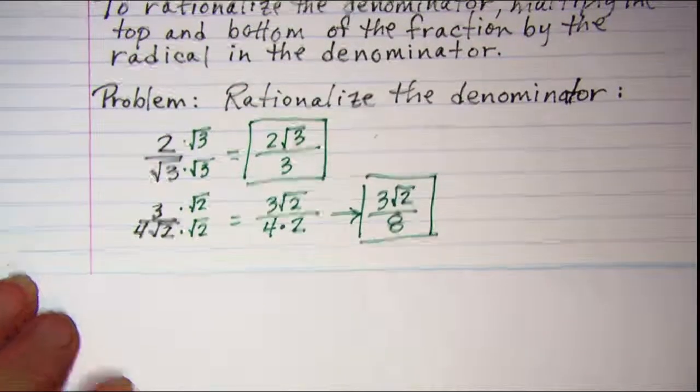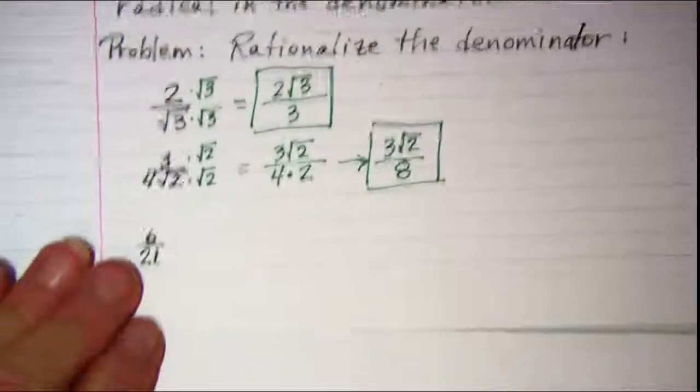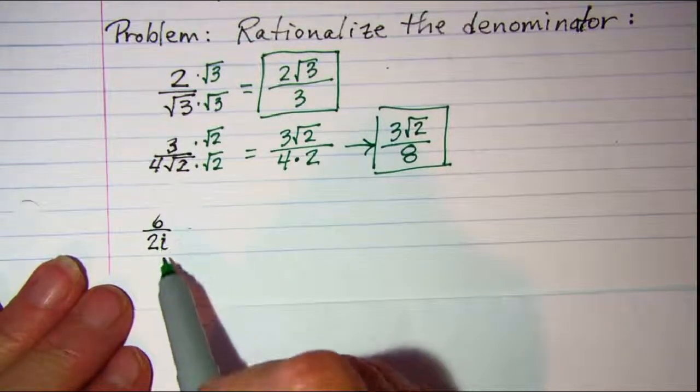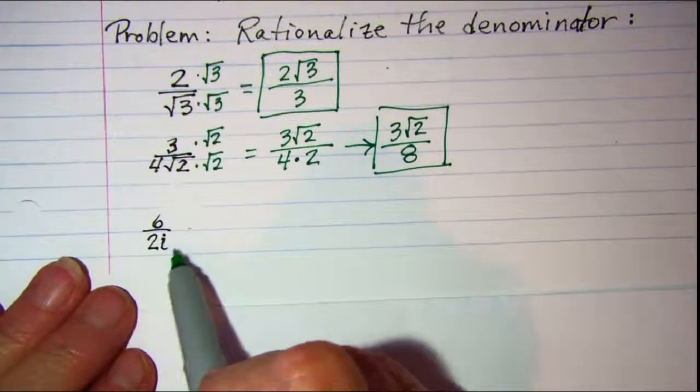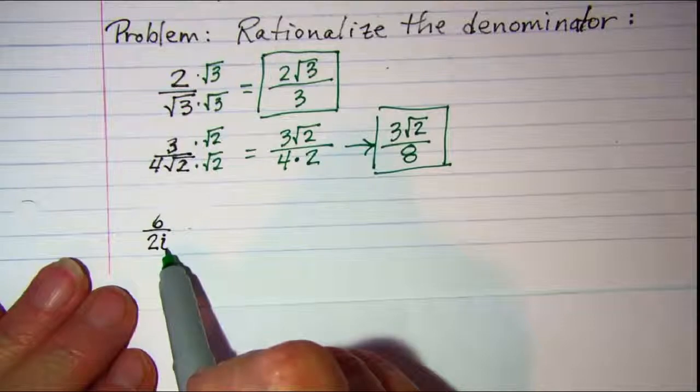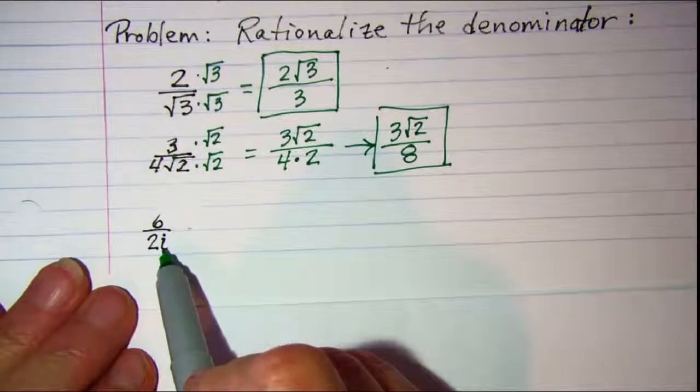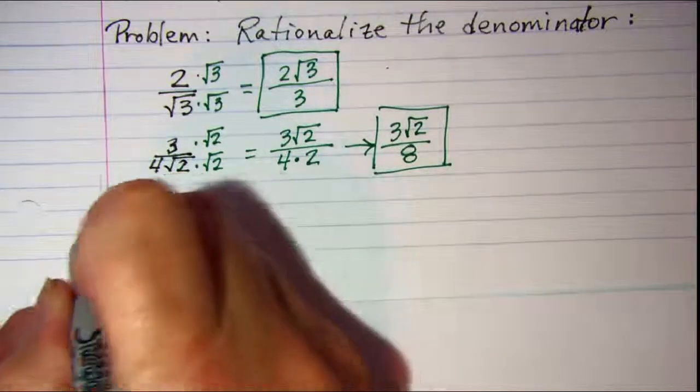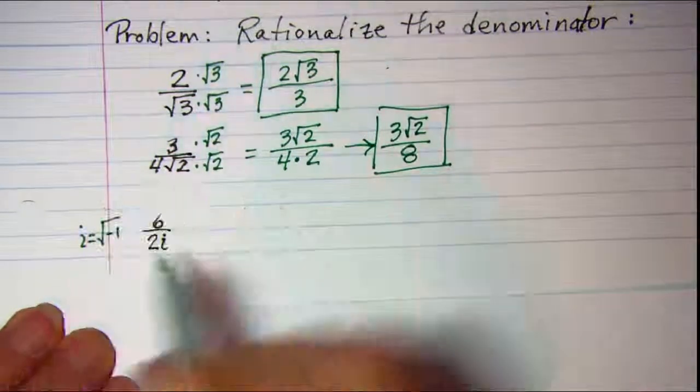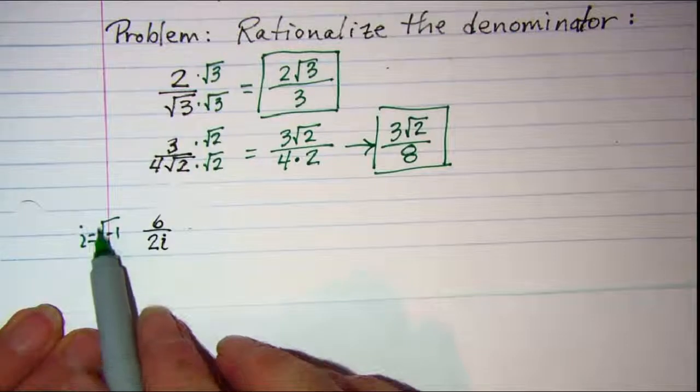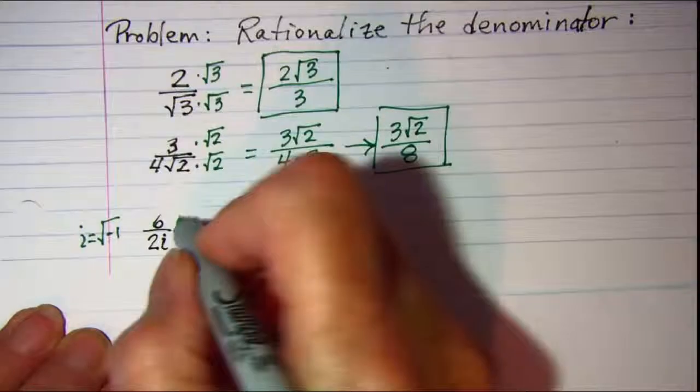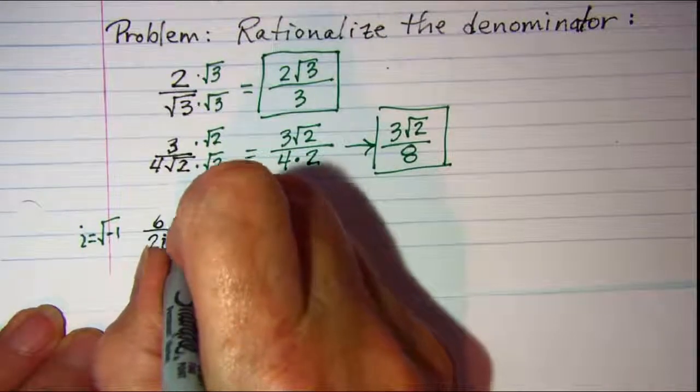Let's look at one more. Now in this one I need to rationalize the denominator because I have a complex number in the bottom here. Remember that i is the same as the square root of negative 1. So the radical is square root of negative 1, but I'll just write i. I'm going to multiply top and bottom by i.